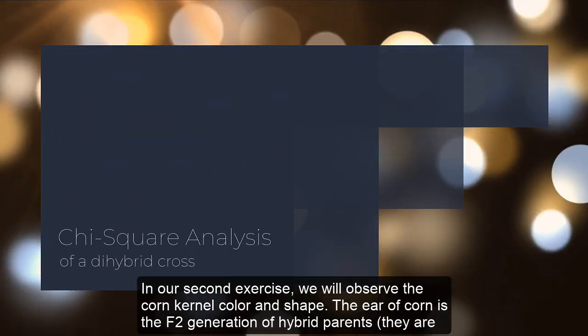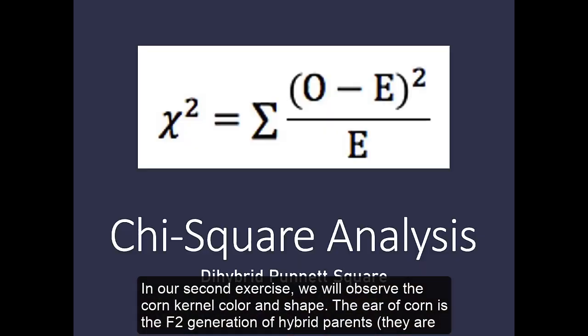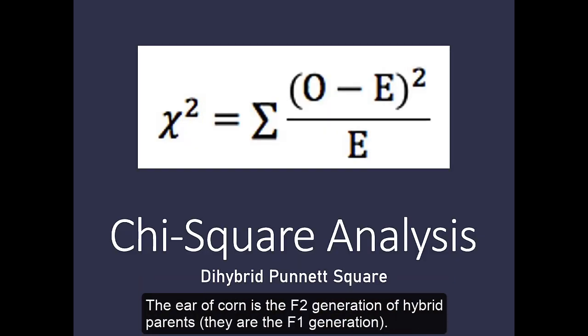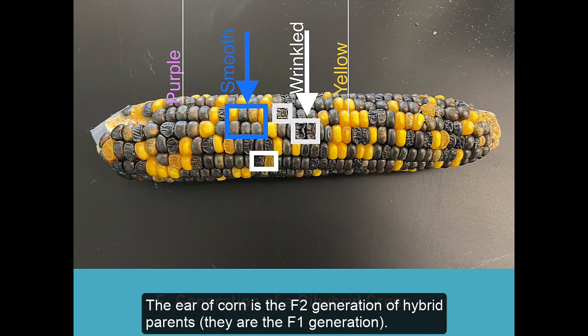In our second exercise, we will observe the corn kernel color and shape. The ear of corn is the F2 generation of hybrid parents, they are the F1 generation.